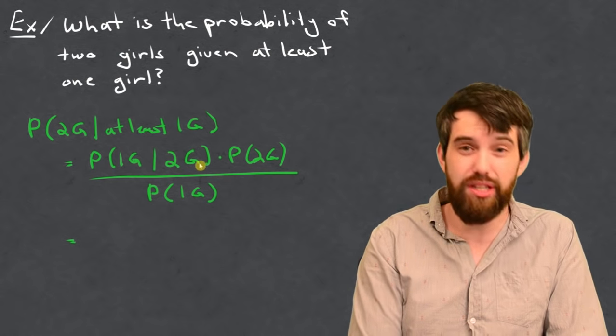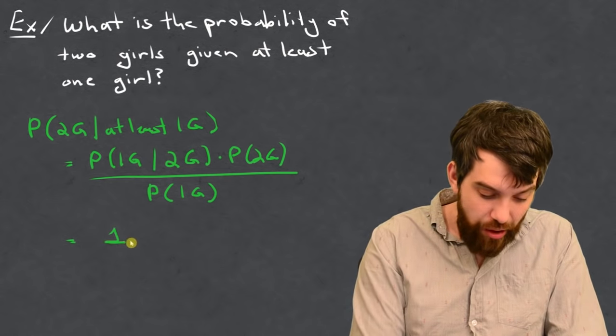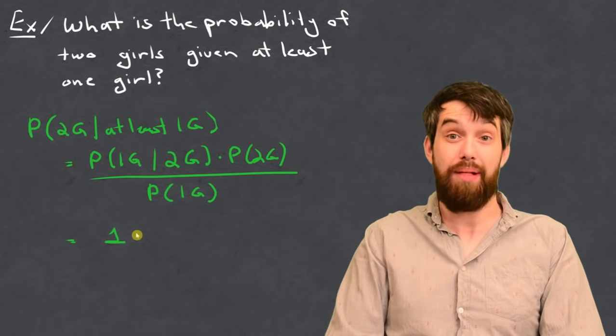So, the P of 1G, given the 2G, is really, really easy to compute. It's 100%, or it's just the value of one. I don't have to do anything. Okay, well, that was nice.